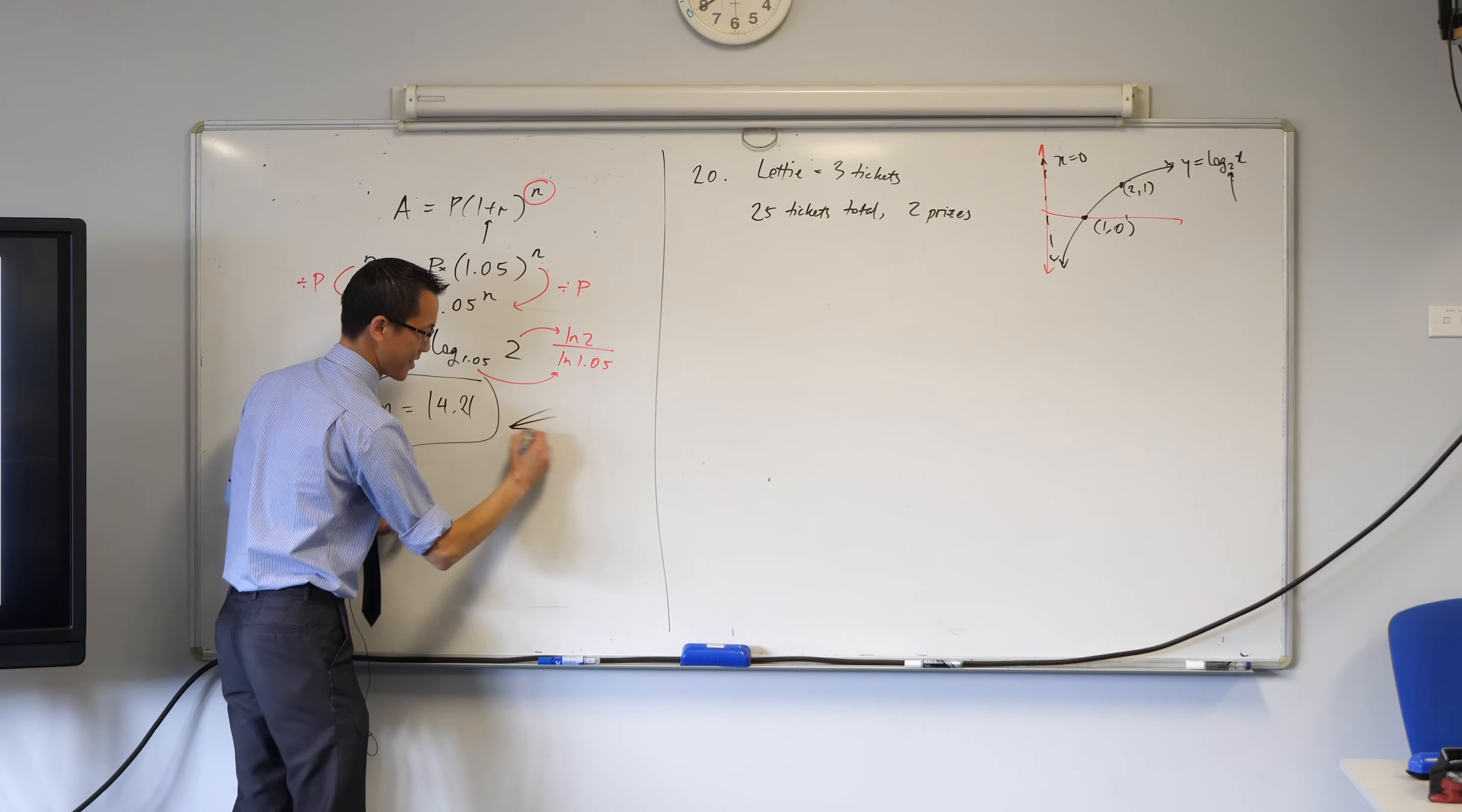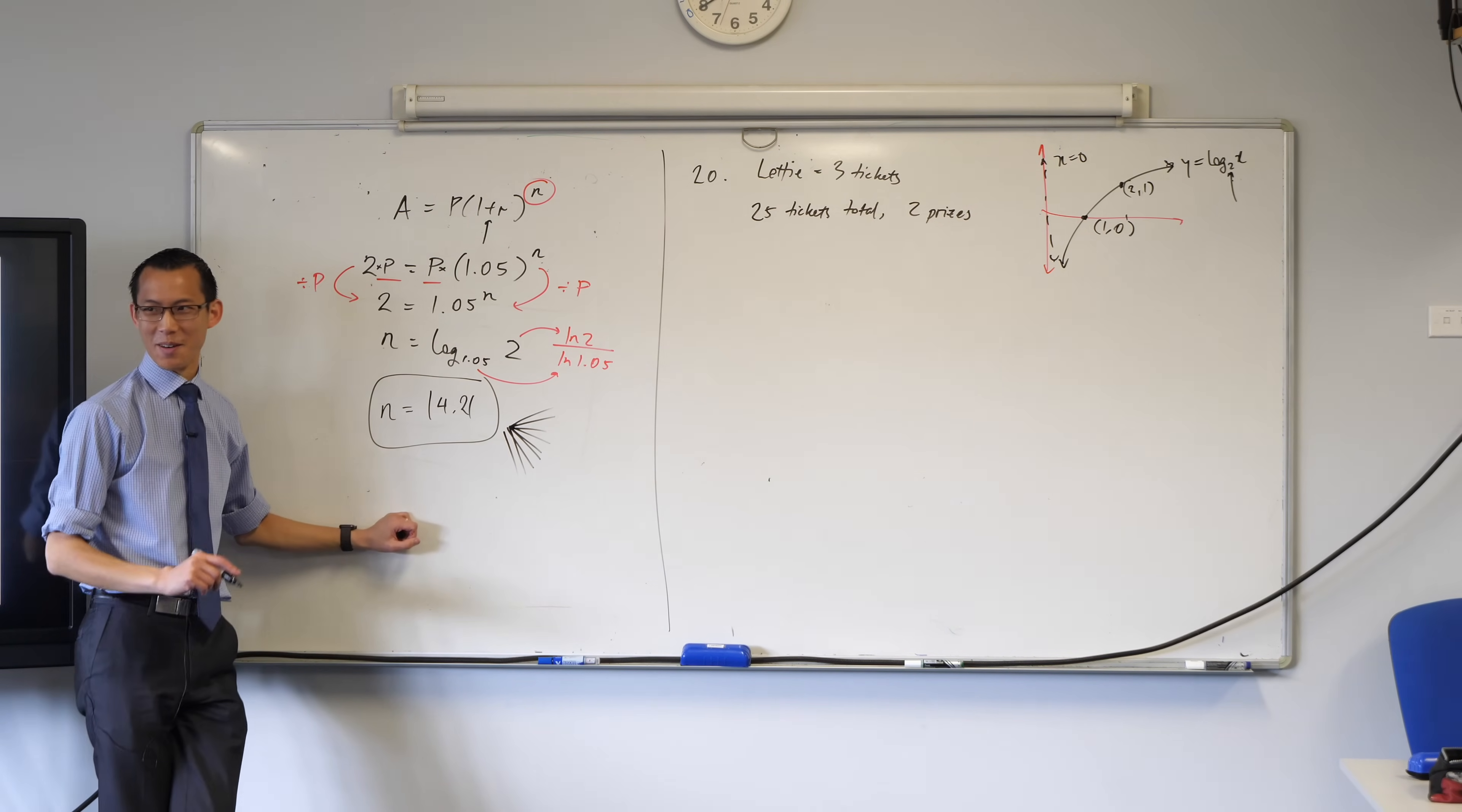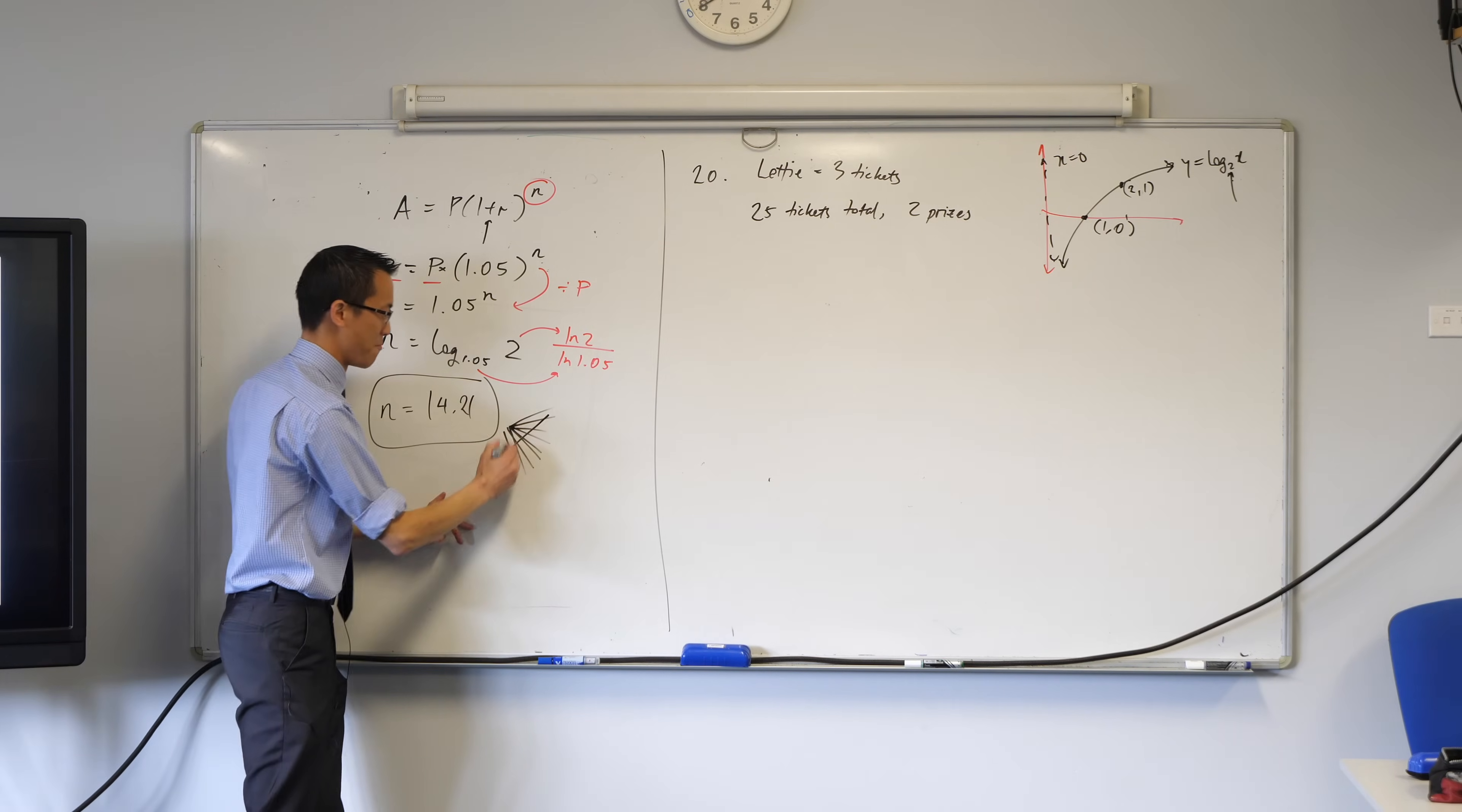So I saw some of you start off like this, and you were like, uh oh, this is not going well, right? It's like, oh, I have 25 tickets. Let's draw out 25 things. And then you're like, no, that's a bad idea. So I'm not going to do that.